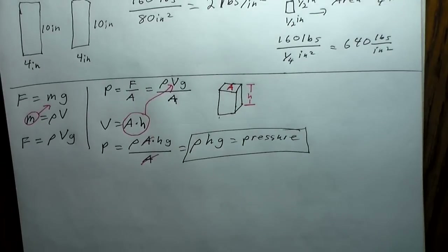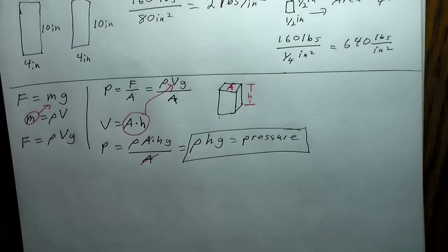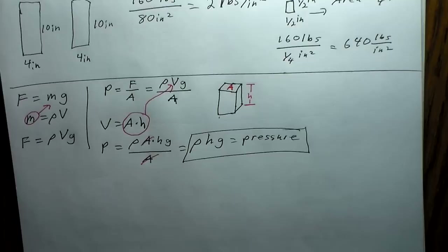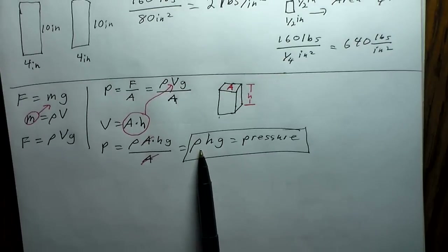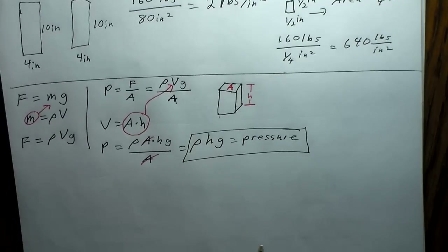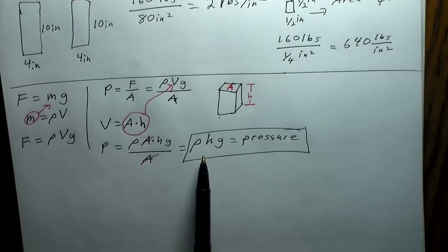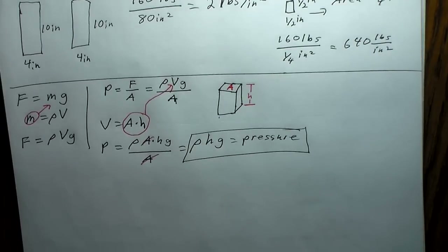This is a very useful equation for liquids with a uniform density. For air over small distances we can use it, but over large distances like from sea level to a mountaintop, the density of air varies with height and you'd need calculus. For something with uniform density like water, we can easily use this equation.